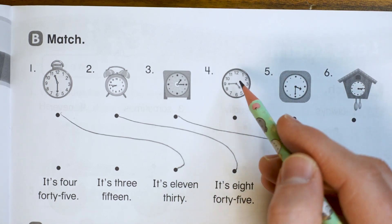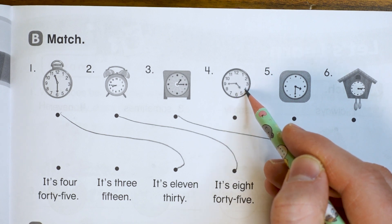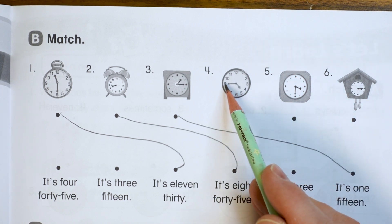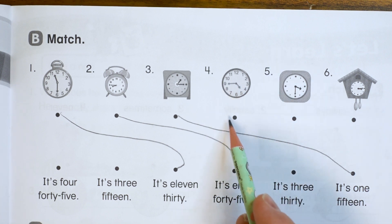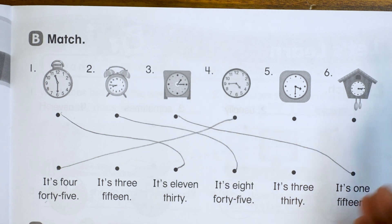Okay. Number four, the hour hand is in between four and five. So that means it's four. Oh, and it's at nine. So 4:45. There's 4:45 right there.